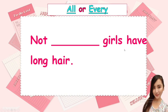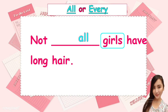More practice: all or every. Let's read the sentence. Blank girls have long hair. What is the noun in this sentence? Girls. It's plural. So are we going to use all or every? The answer is all. Not all girls have long hair. We use all because girls is plural.